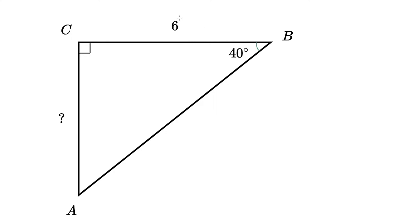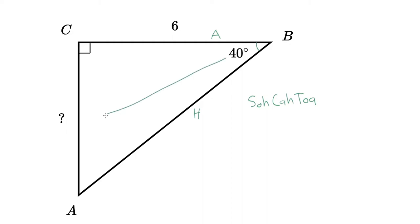Now, is this enough information to solve the triangle and figure out how long the side is? Yes, it is. Now, if you remember SOHCAHTOA, we need to figure out which of these three functions we're going to use to solve the triangle. Relative to our 40 degrees, this side would be our adjacent, because it is adjacent to the 40. Side BA is our hypotenuse because it is the longest side. And over here we find our opposite, because it is far away — it's the opposite side. So we've labeled our triangle.